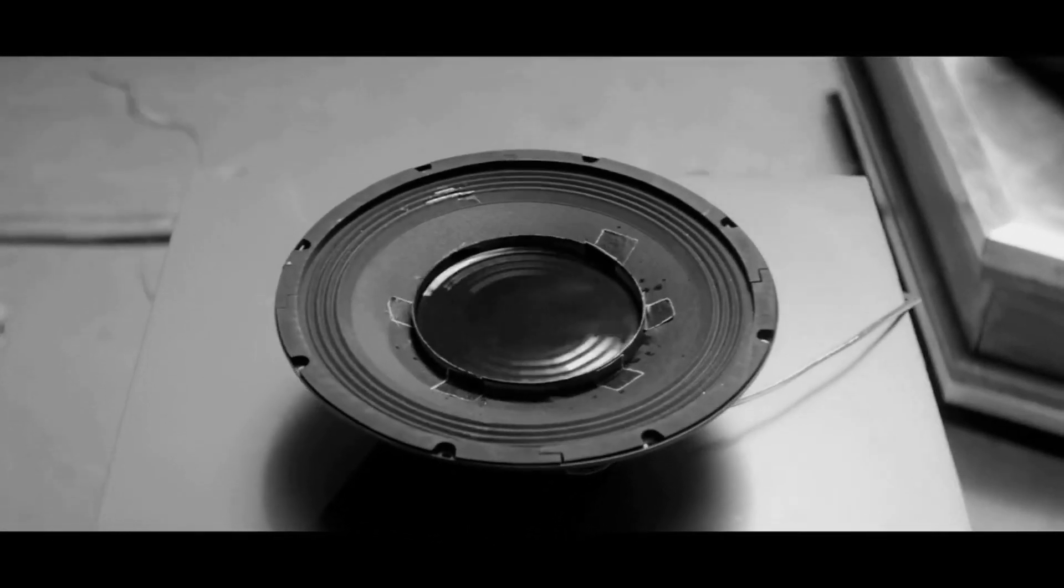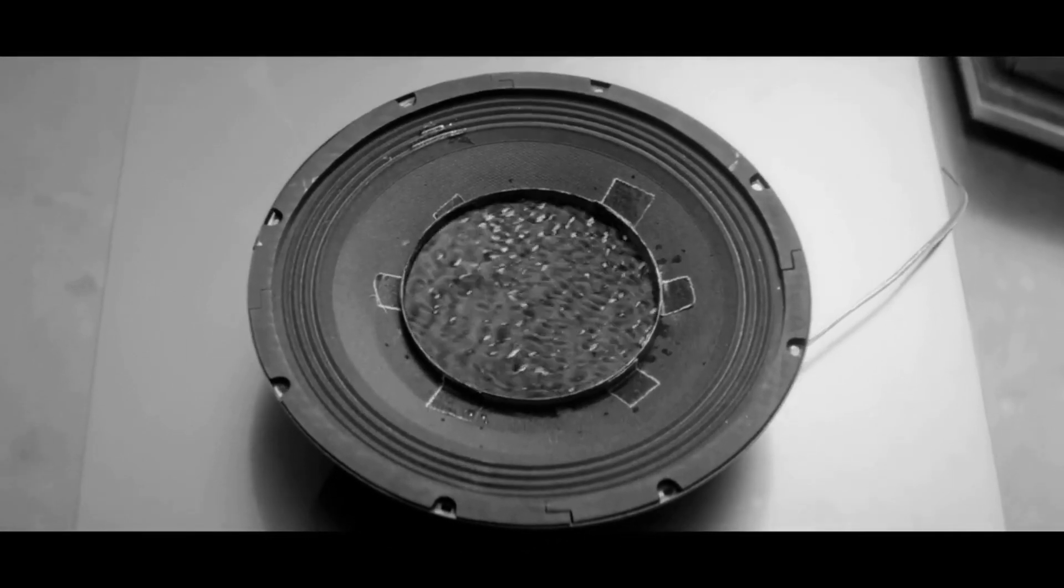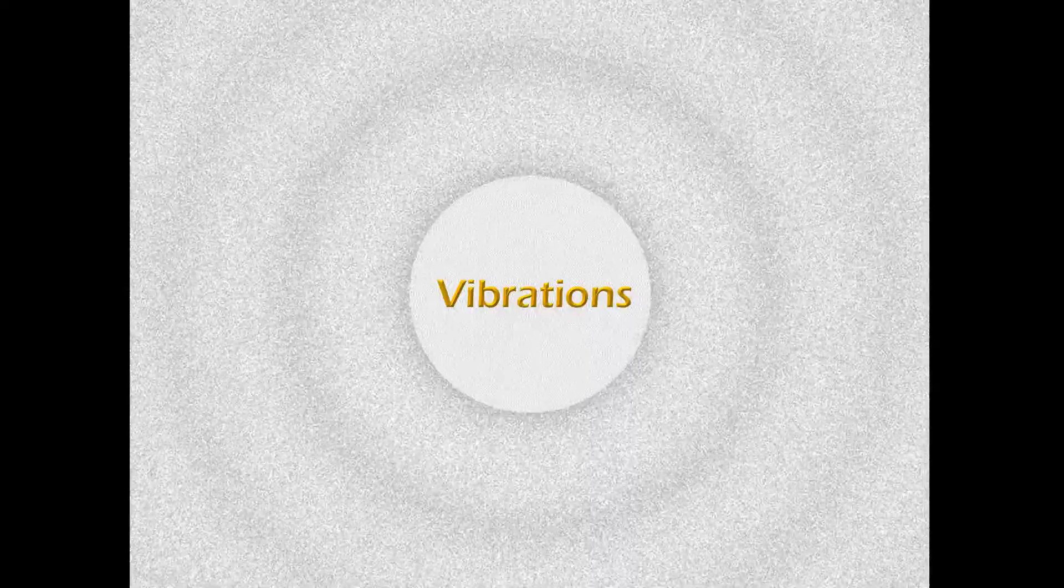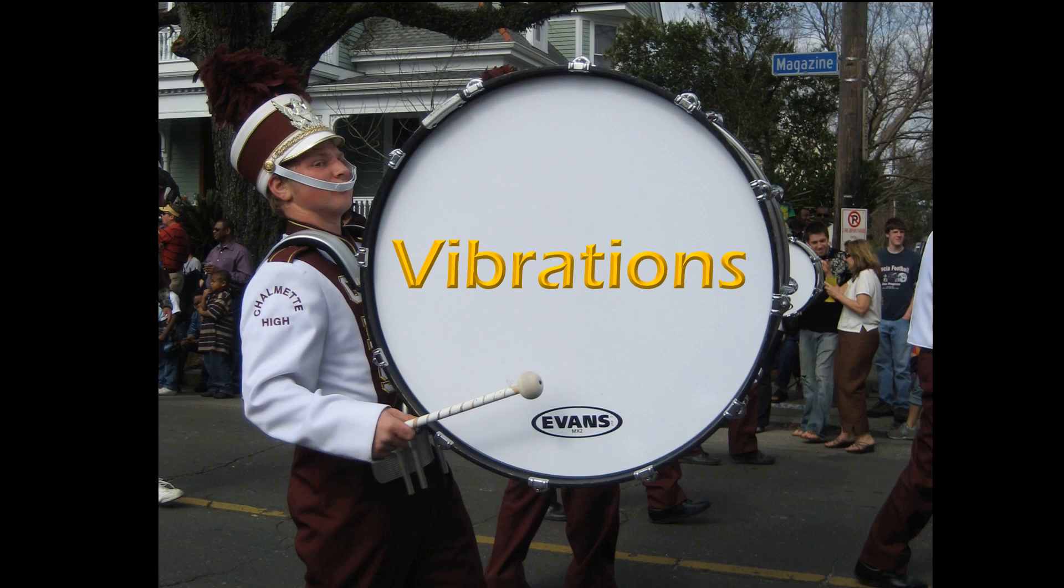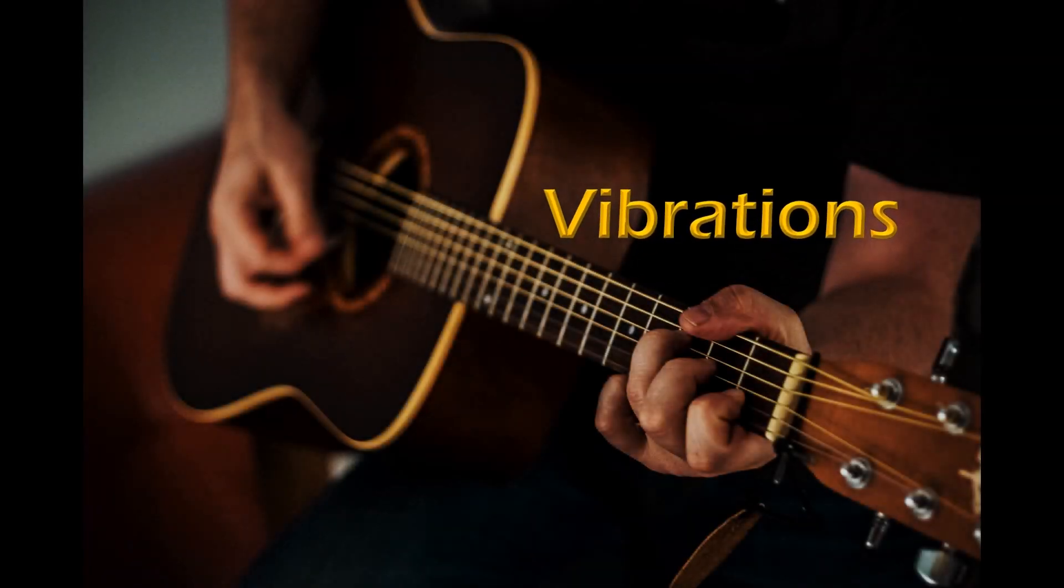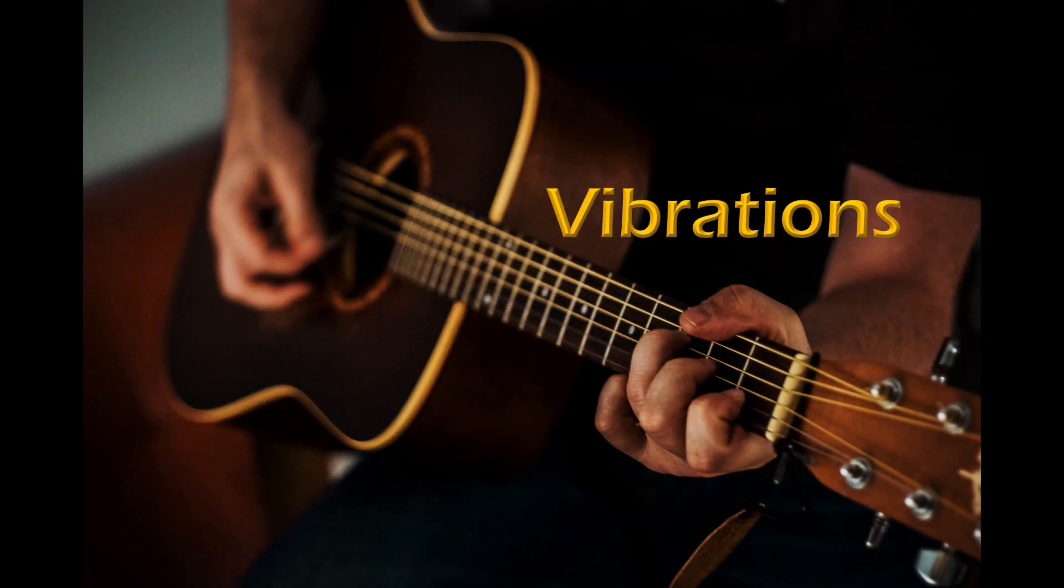But first we have to ask a question: how is sound actually produced? And we have to understand the answer of this question before understanding the mechanism of how a speaker works. In one line, sound is all about vibrations. A drum can produce sound only when it is hit by a drummer. A guitar produces music and beats when the guitarist vibrates the strings.